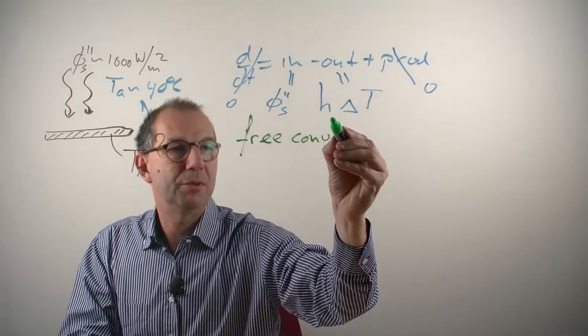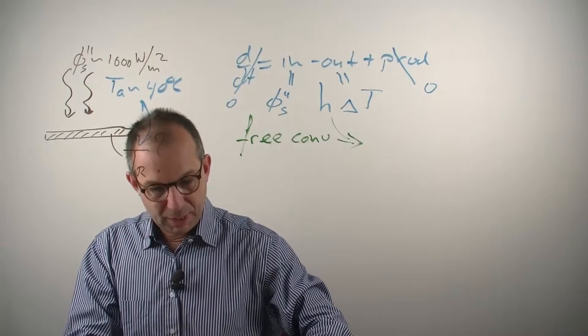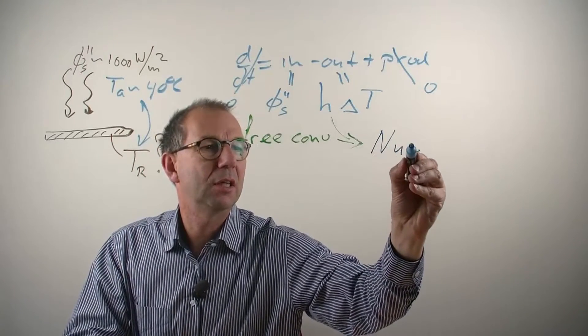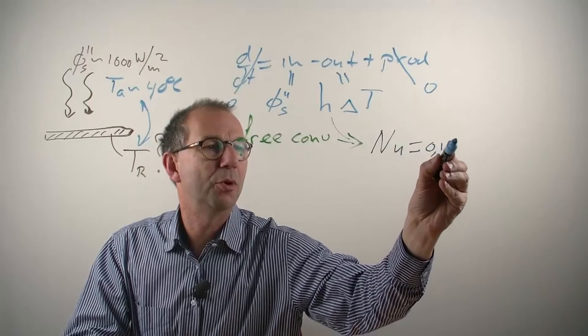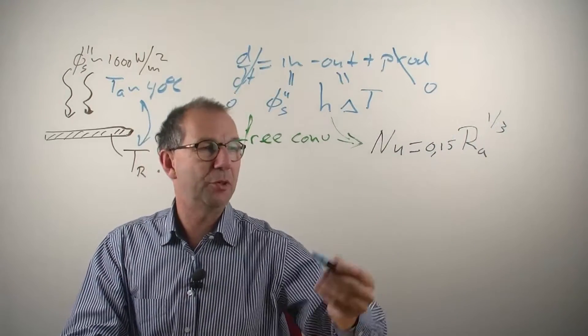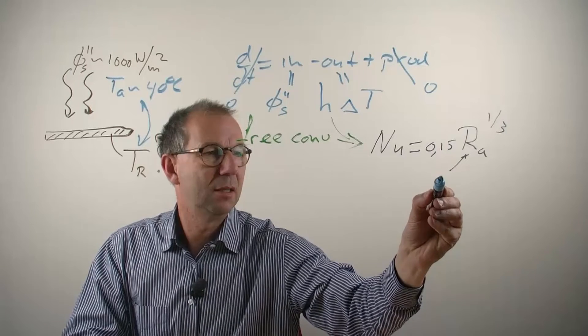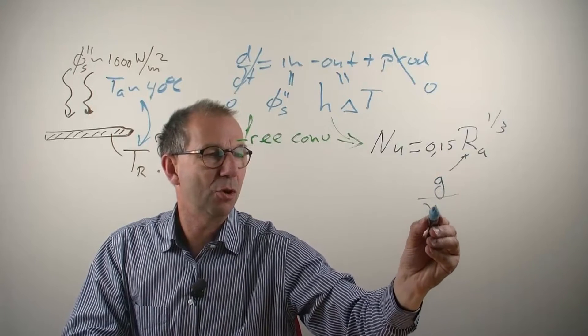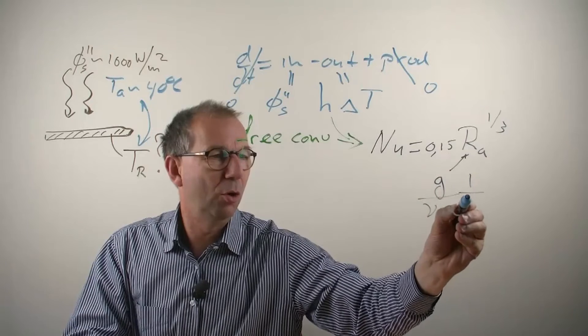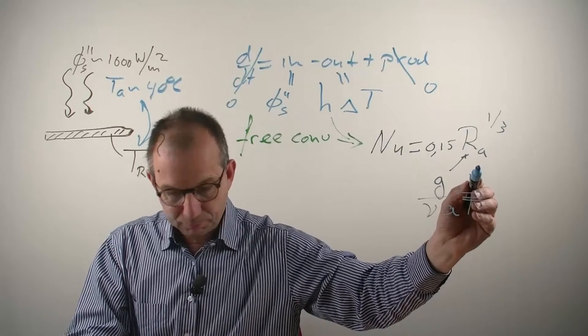If we look up the h coefficient, or better we look up the Nusselt number for this, we get an expression that reads something like Nusselt equals a constant, the dimension is 0.50 times what they call the Rayleigh number to the power one third. Now obviously that doesn't help if you don't know what the Rayleigh number is. But the Rayleigh number itself is given by gravity over kinematic viscosity over thermal diffusion coefficient and for a gas 1 over T average comes in and then a length scale to the power 3.